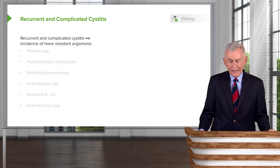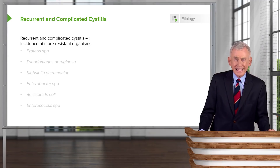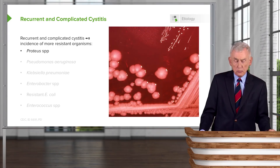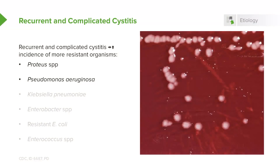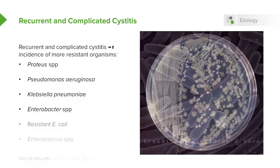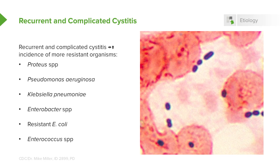Recurrent and complicated cystitis leads to an increased incidence of more resistant organisms not usually found causing cystitis. These include Proteus, Pseudomonas aeruginosa, Klebsiella pneumoniae, Enterobacter species, and even some resistant E. coli. Among the gram-positives, Enterococcus.